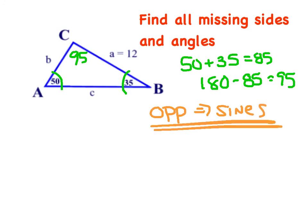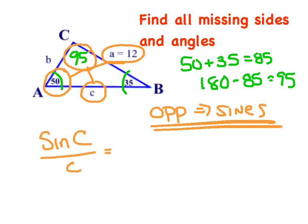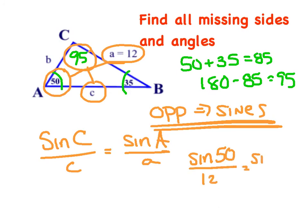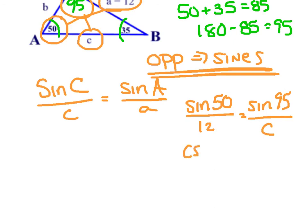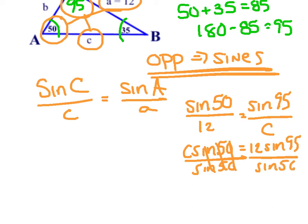They are going to be interchanged on you — just pay attention to what you have. I know angle 50 and the side opposite is 12. I know 95 and can get the opposite side. Using law of sines: sine of C over C equals sine of A over A. The sine of 50 is opposite side 12, and the sine of 95 is opposite side C. Cross multiply: C times sine of 50 equals 12 times sine of 95. Divide by sine of 50, and I get C equals 15.6, or 16 to the nearest whole number.